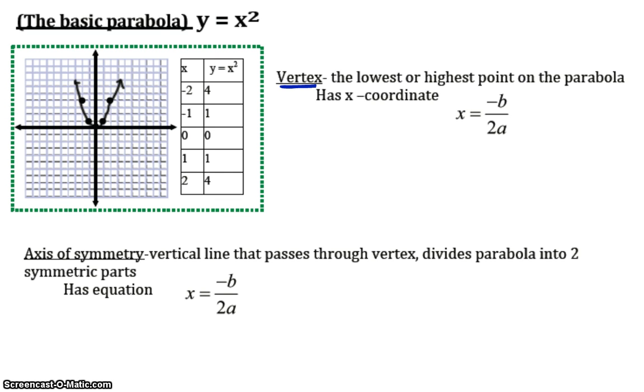It's either going to be the highest point or the lowest point on your parabola. So, it's either a maximum or a minimum. But, it's that one special point. In this basic parabola, my vertex is right there, zero, zero. And, we actually have this nice little formula for the x coordinate of a vertex. The x is always going to equal negative b over 2a.